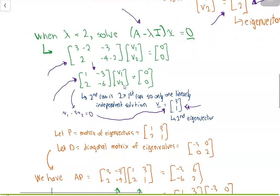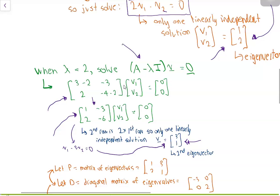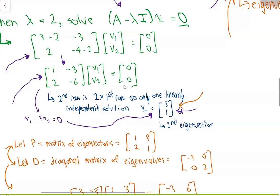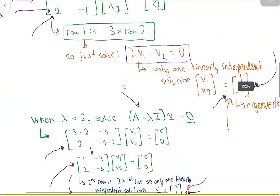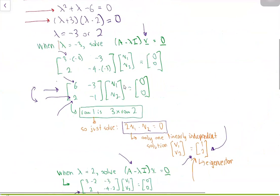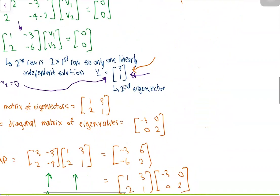Now we can factorize matrix A using the matrix of eigenvectors. Taking the two eigenvectors [1, 2] and [3, 1] and placing them as columns, we form the matrix P = [1, 3; 2, 1]. We also form the diagonal matrix D of eigenvalues, placing -3 and 2 on the diagonals.